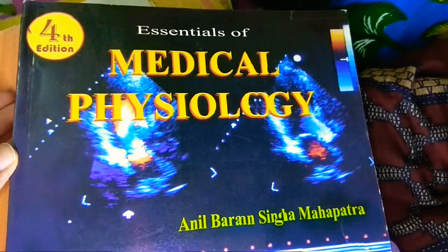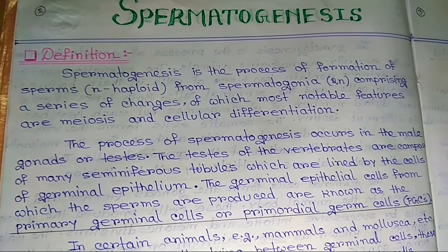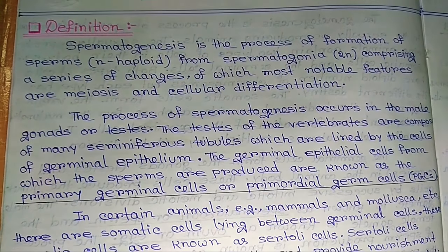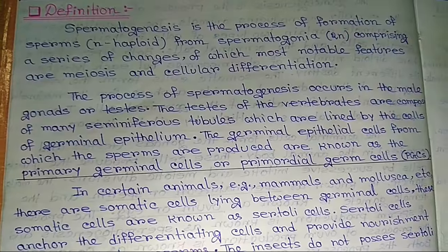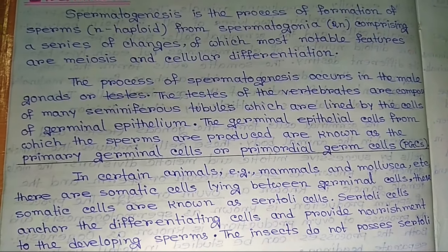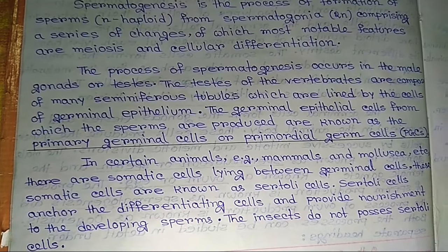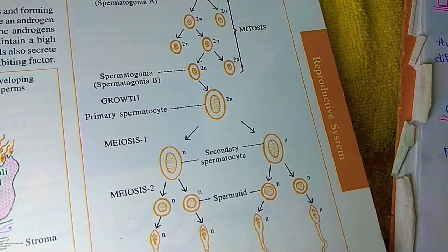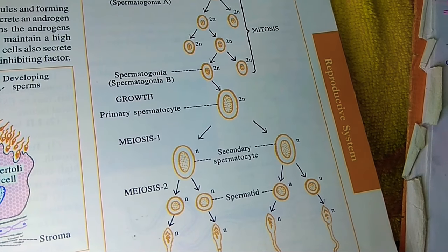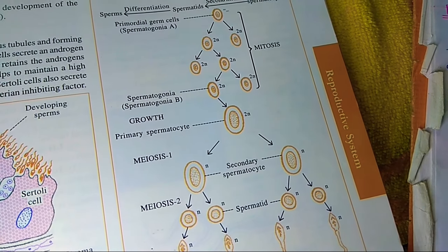The process of spermatogenesis occurs in the male gonads or testes. The testes are composed of many seminiferous tubules, which are lined by the cells of germinal epithelium. The germinal epithelial cells from which the sperms are produced are known as primary germinal cells or primordial germ cells. Spermatogenesis is a sperm formation active process involving 2N number chromosomes, producing N number chromosomes in sperm.